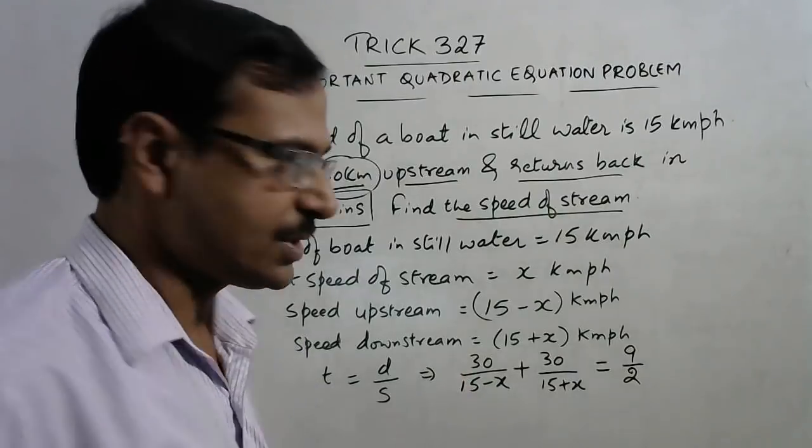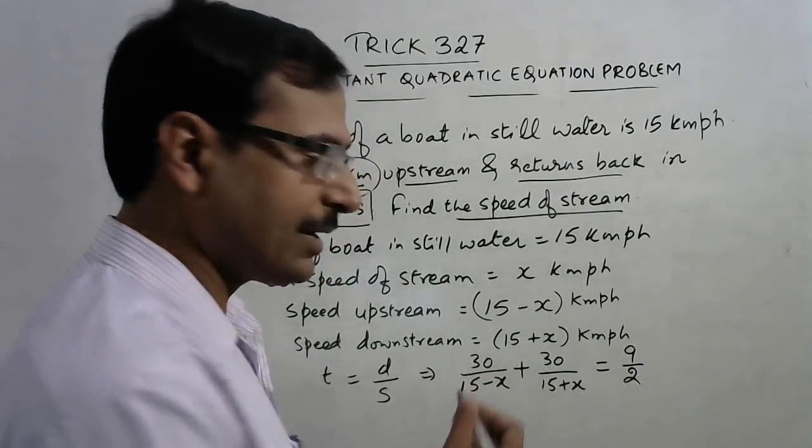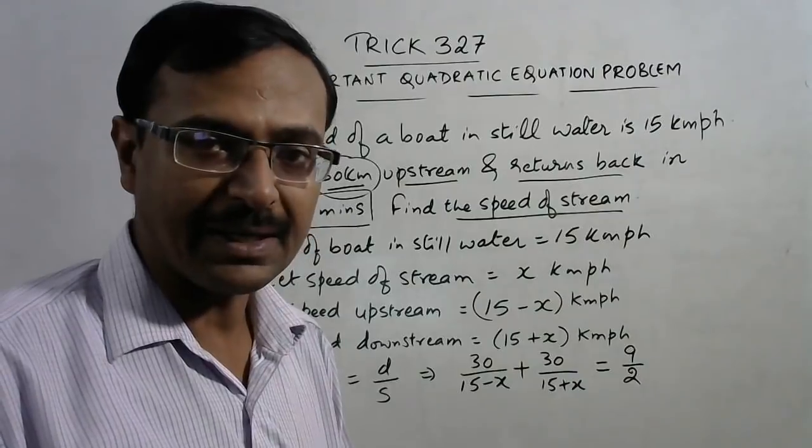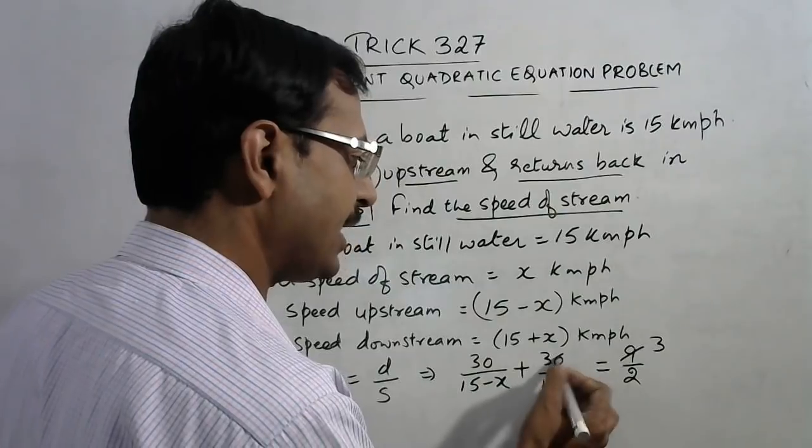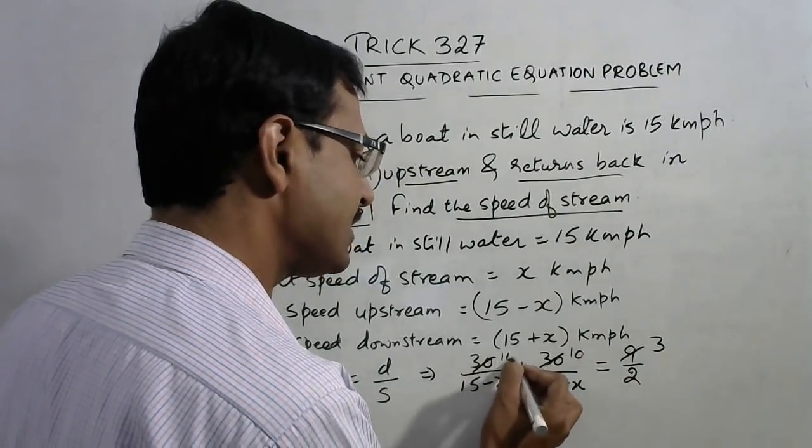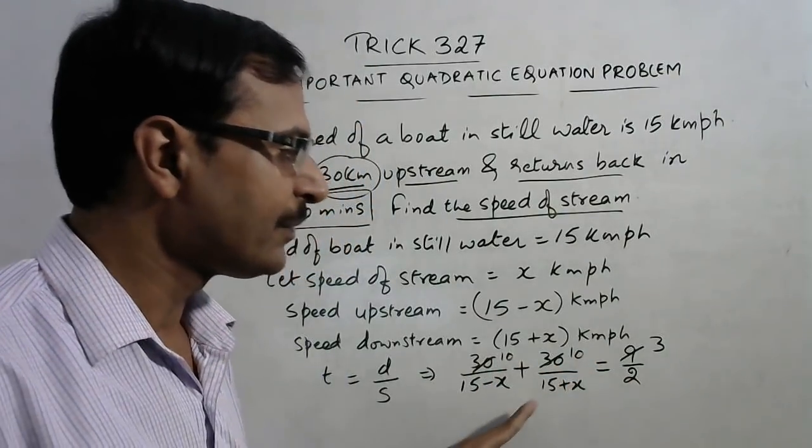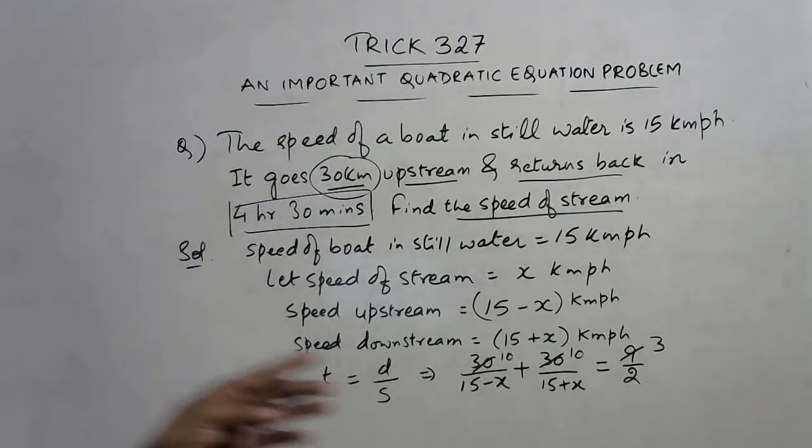Now how to solve this question? See, 30 and 30, the three numerators are divisible by 3, so I will cancel that common factor 3: 3 times, 10 times, 10 times, and 10 times. Now I will cancel and then cross multiply.